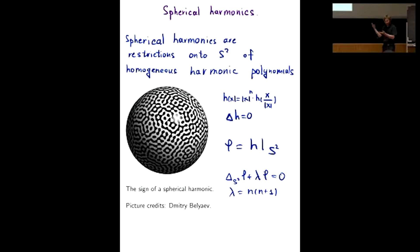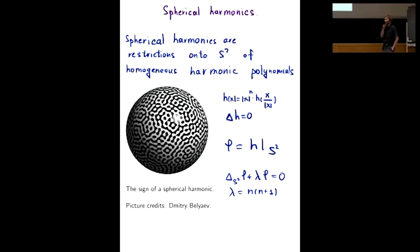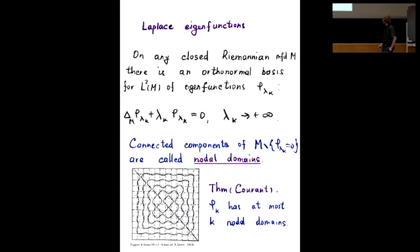This additional structure comes from the Laplace equation when you rewrite it in intrinsic terms of the sphere. When it comes from the three-dimensional case, the restriction satisfies a different PDE, and these functions are called Laplace eigenfunctions. They satisfy the PDE with eigenvalue roughly equal to the square of the degree of the polynomial.